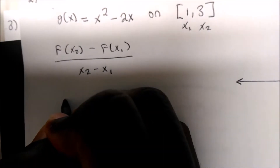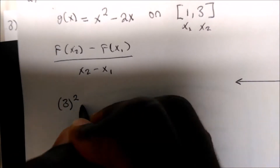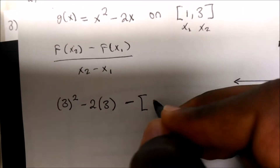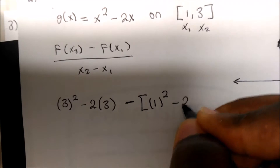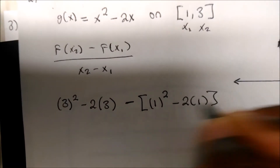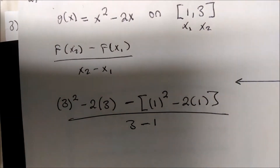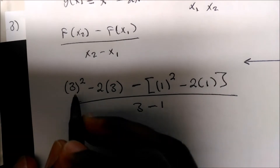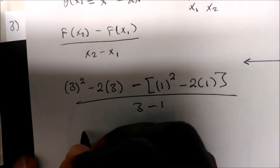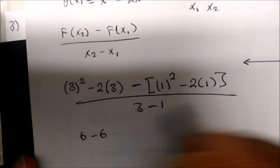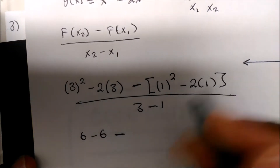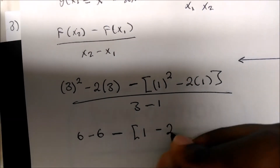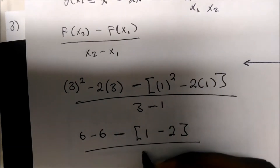Plugging in the values: 3 squared minus 2 times 3, minus the whole quantity (1 squared minus 2 times 1), divided by 3 minus 1. So 3 squared is 9 minus 6, which gives us 0, minus (1 squared is 1 minus 2 times 1, which is 2), over 2.